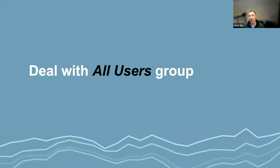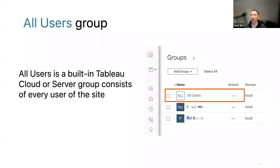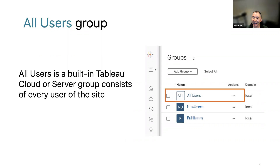First, dealing with the All Users group. Whether you use online cloud or on-premises server, Tableau always has a special group called All Users in every single site — it consists of every single user of the site. The problem is the All Users group is available for every publisher in the site, and every publisher is able to use that group for permissions. It's very handy, but it can be a problem when your site has too many users.